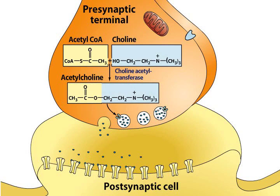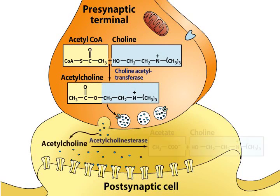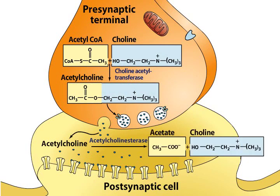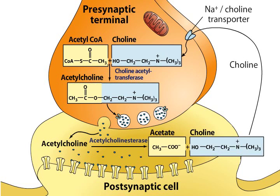After release, acetylcholine is rapidly metabolized by the enzyme acetylcholinesterase, which breaks down acetylcholine into choline and acetate. The choline is transported back into the nerve terminal by membrane transporters and used to resynthesize the neurotransmitter.